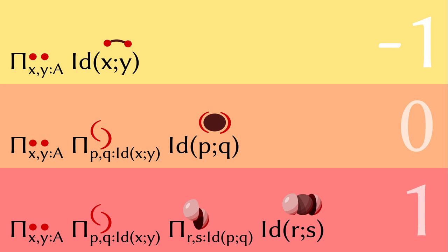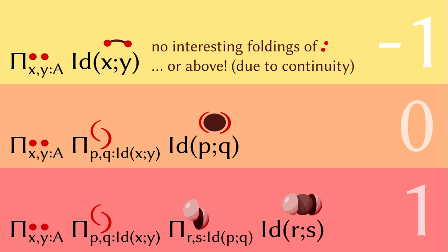Now you can see the pattern. The condition for level minus one collapses any folding of the two points because the arc will connect the points. The two points are the S-naught. So this basically says there is no interesting folding of S-naught. But moreover, it collapses the folding of all spheres of higher dimensions due to continuity, a phenomenon we explored in HOMO2 and earlier lectures.